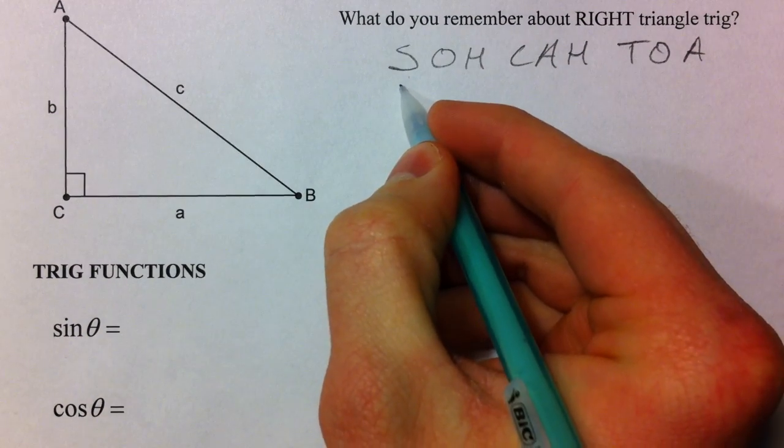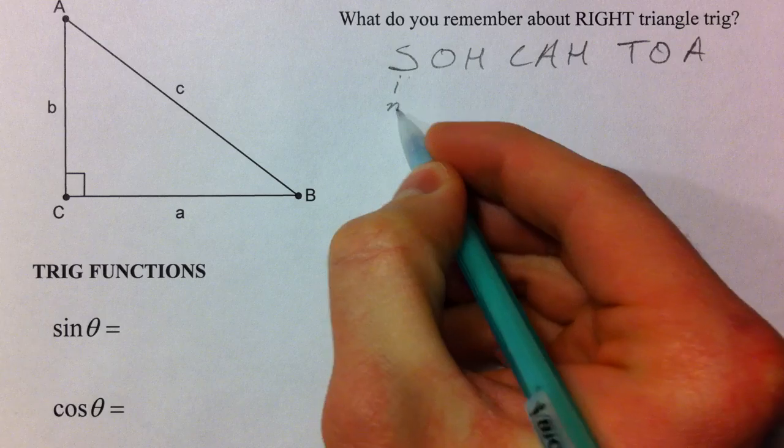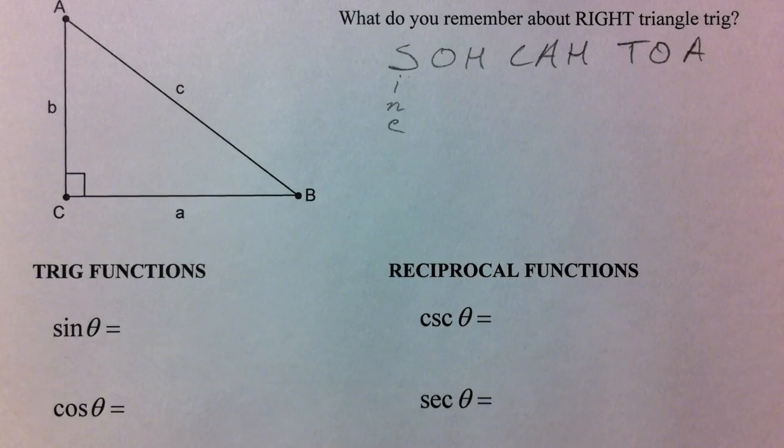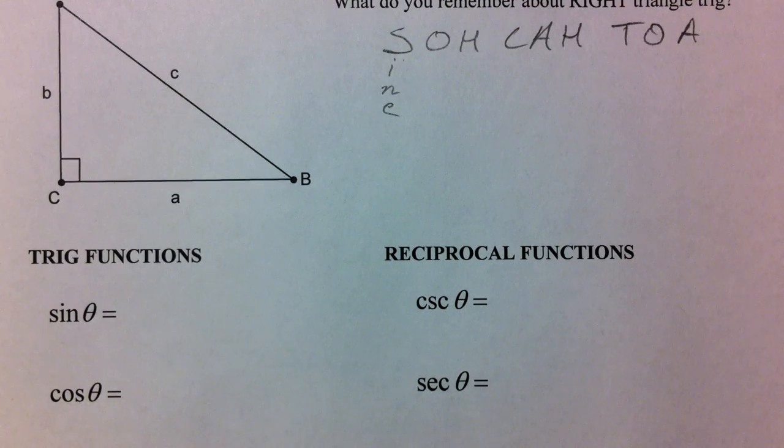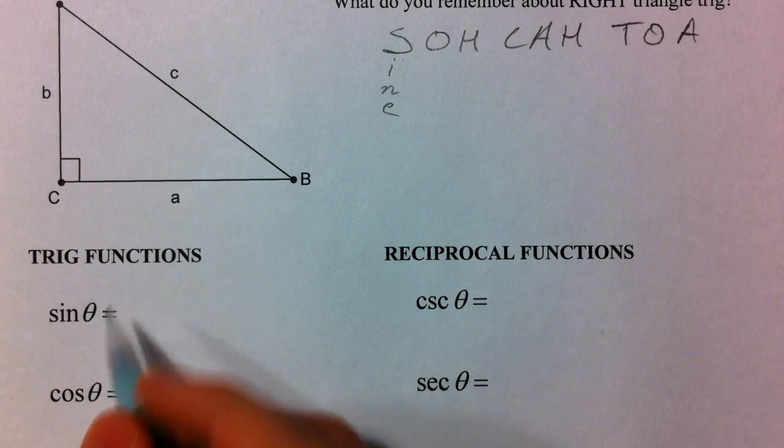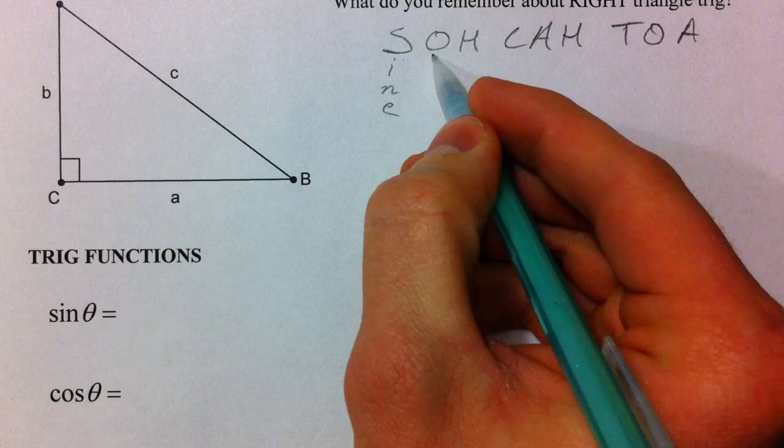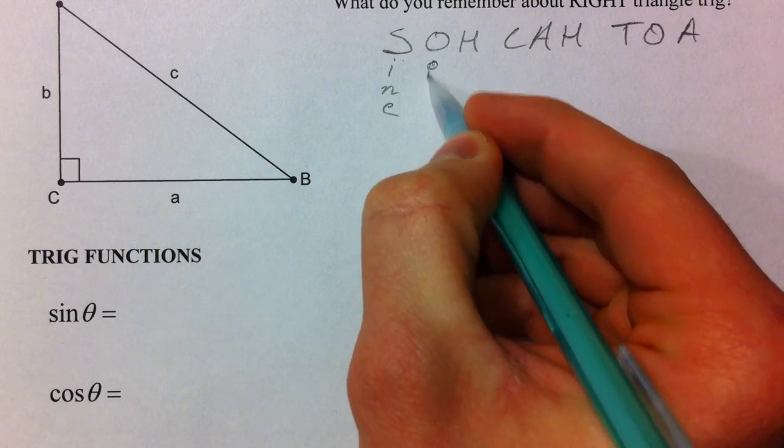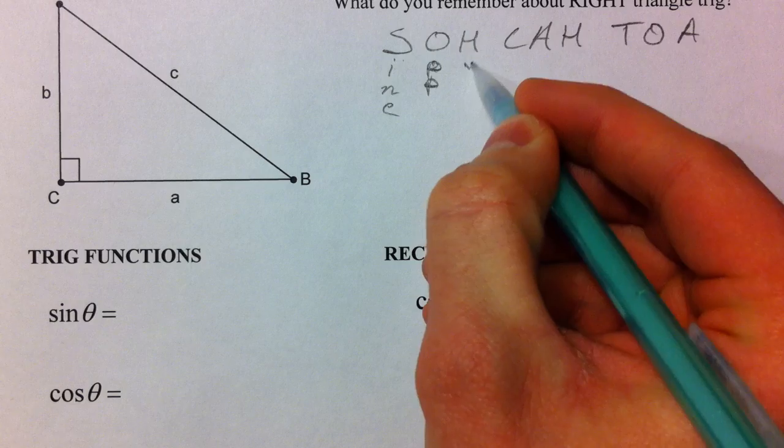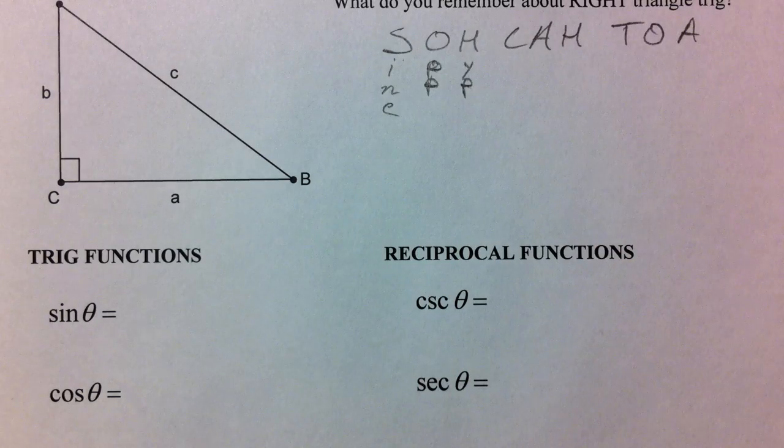This is the sine, which is S-I-N-E. We shorten it, and it kind of looks like the word sin, because it is the word sin, but we say sine. And it's made up of the opposite over the hypotenuse.